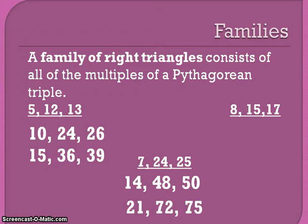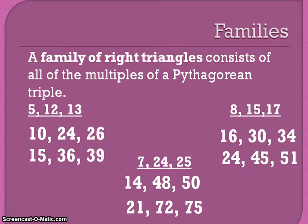And if I multiplied by 3, I'd have (21, 72, 75). And we could even look at the same thing with the (8, 15, 17). Multiply by 2, multiply by 3.